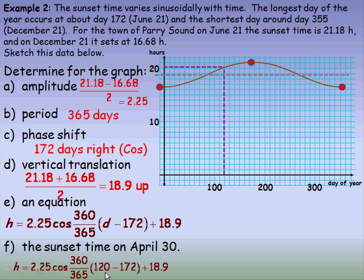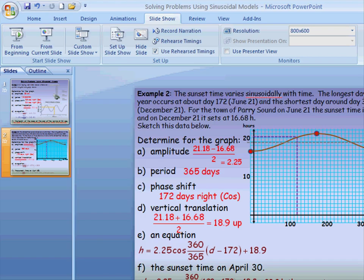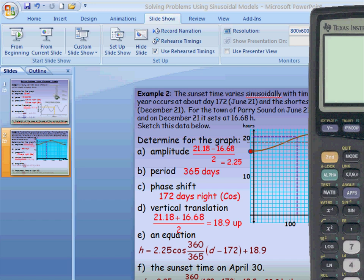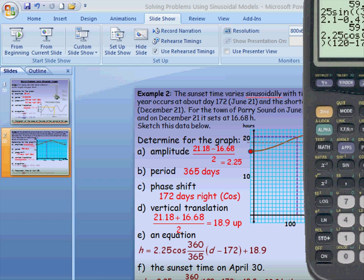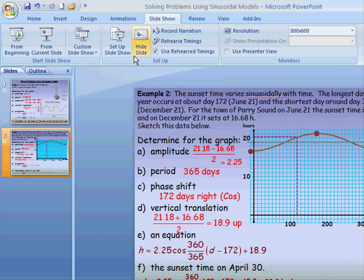I'm going to plug this in the graphing calculator. The calculation is 2.25 cos(360/365) and then we're putting 120 in place of the day of the year, minus 172, plus 18.9. And we get 20.3, so it's pretty close to the 20th hour.